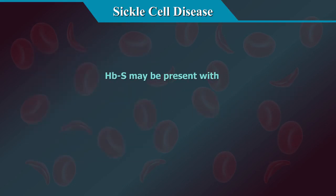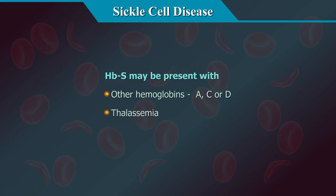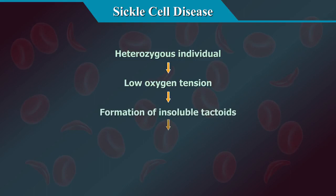HBS may be present with other haemoglobins such as haemoglobin A, C, or D, or with thalassaemia, a condition that interferes with the synthesis of normal haemoglobin. Under conditions of low oxygen tension, heterozygous individuals can develop acute symptoms due to the formation of insoluble tactoids.